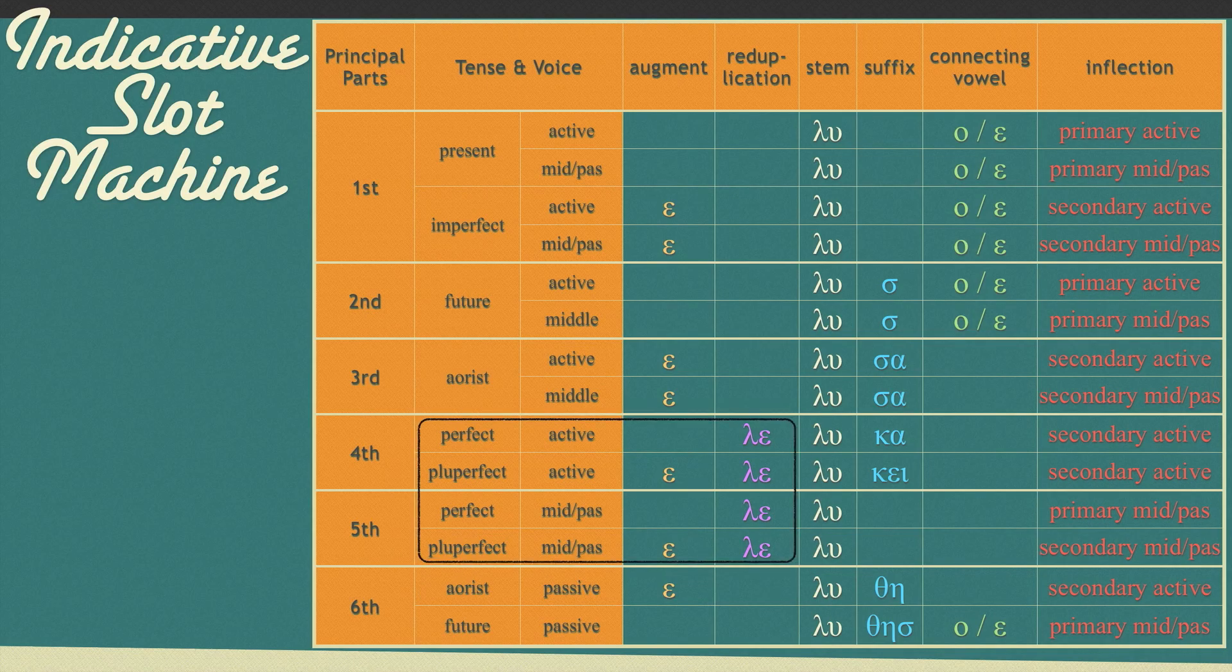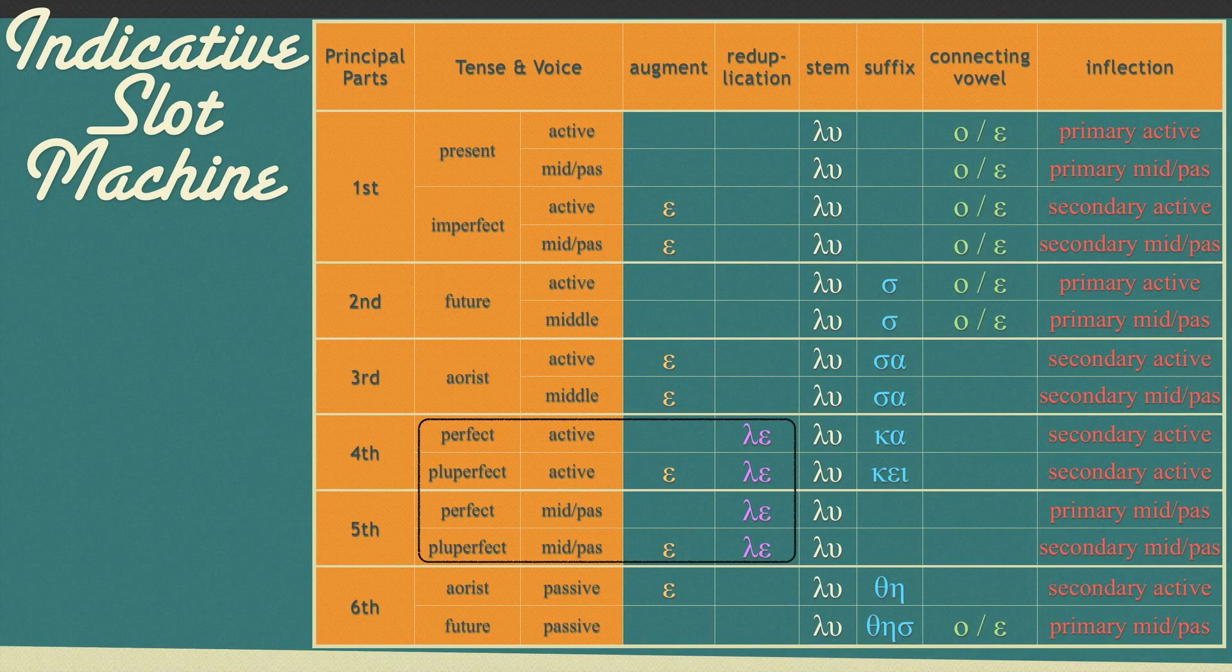Slot 2, reduplication, is only used by perfect and pluperfect. Reduplication takes the first letter of the stem and duplicates it with an epsilon.